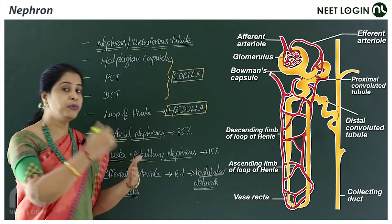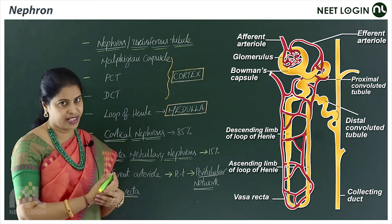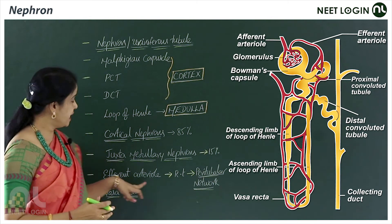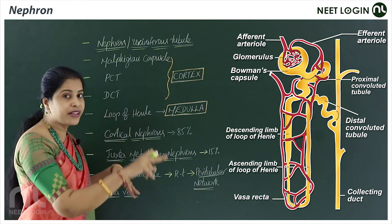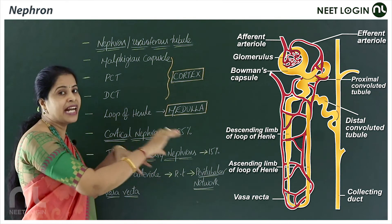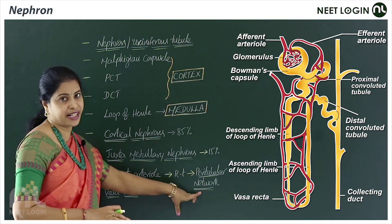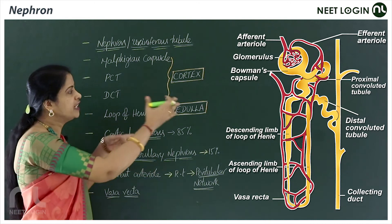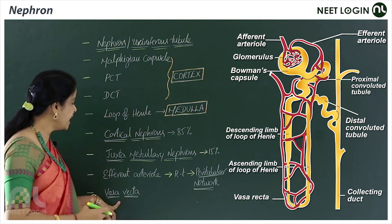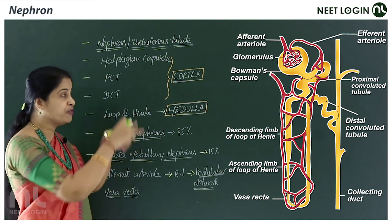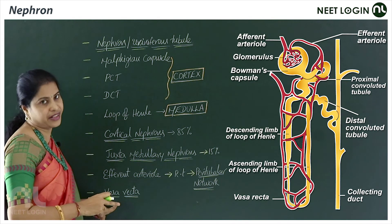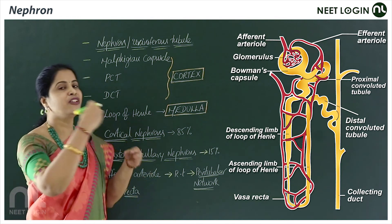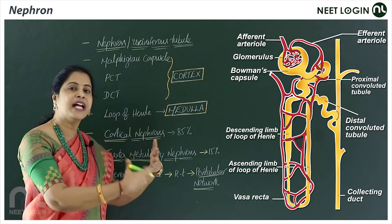The afferent arteriole forms the glomerulus and leaves as the efferent arteriole. The efferent arteriole then surrounds the renal tubule — the PCT and DCT — forming a network called the peritubular network. A fine branch of the blood vessel running parallel to Henle's loop is called the vasa recta. All these tubules join together to form the renal vein.